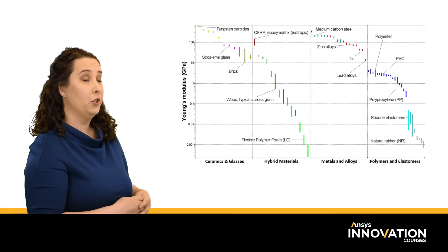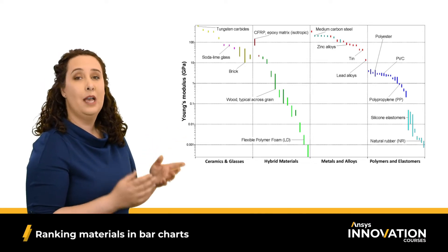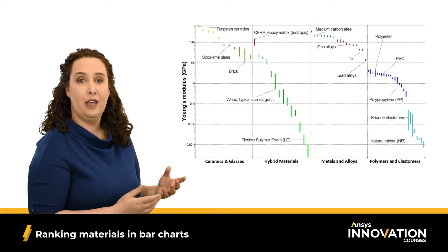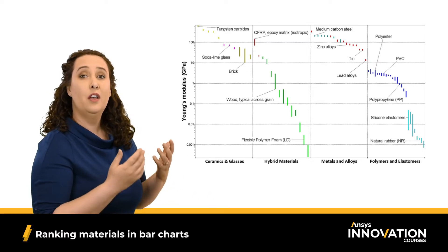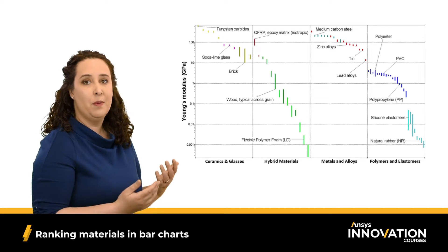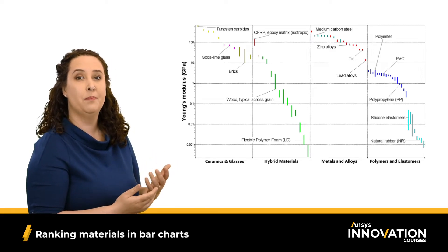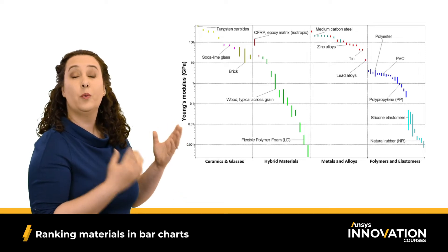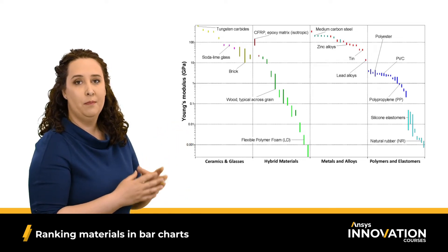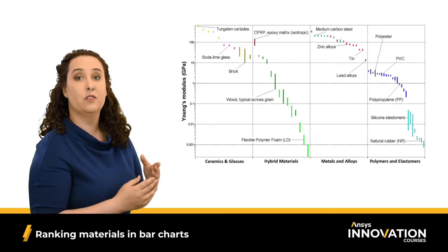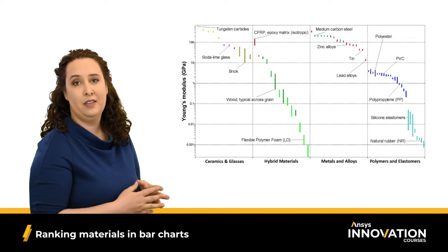We'll start with a bar chart, like the one shown here. Now I want to introduce this subject of ranking. I just said that often we're trying to optimize our material selection by maximizing or minimizing some property. I can do this with ranking with my bar chart. I can rank the materials from best to worst, based on my design criteria.